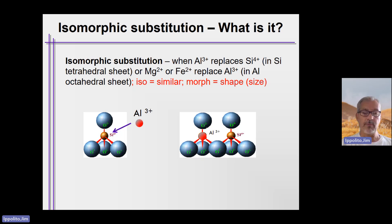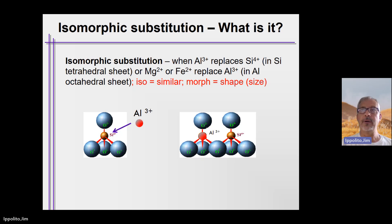This is called isomorphic substitution. The term isomorphic means 'iso' is same, and 'morphic' is shape — so same shape or same size.